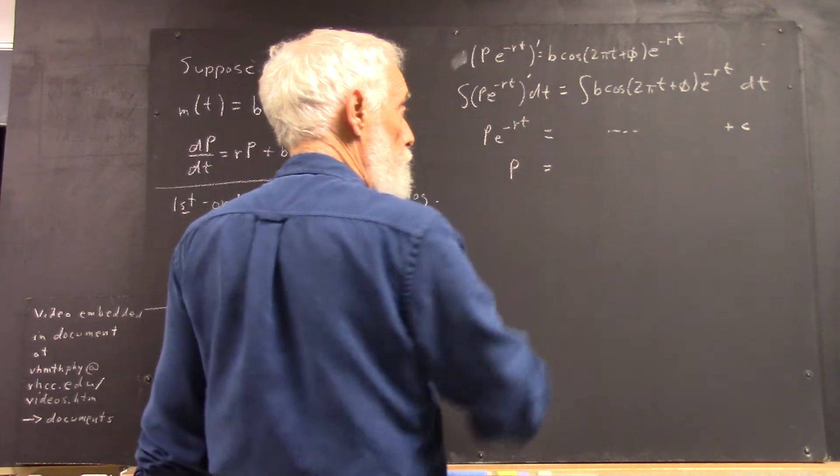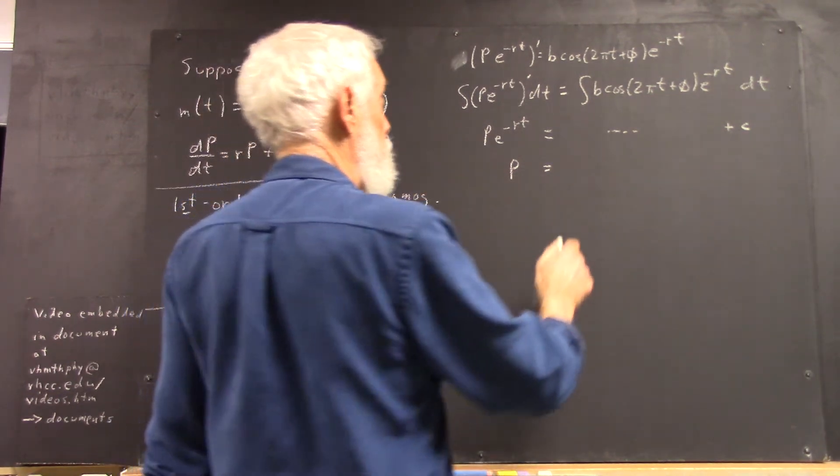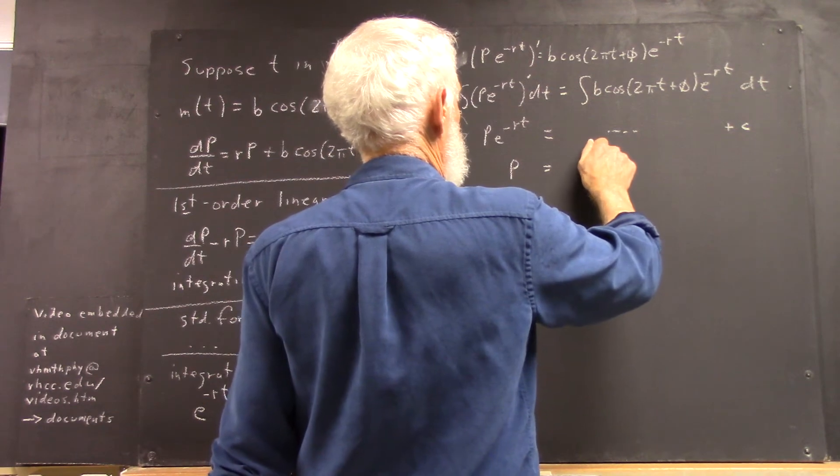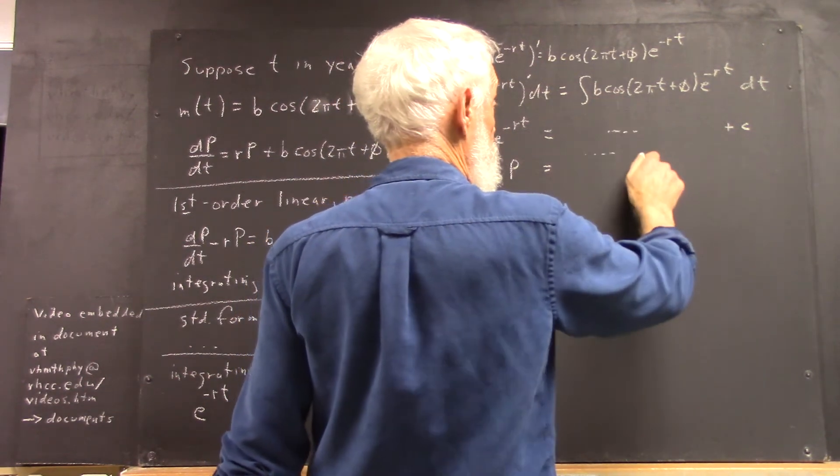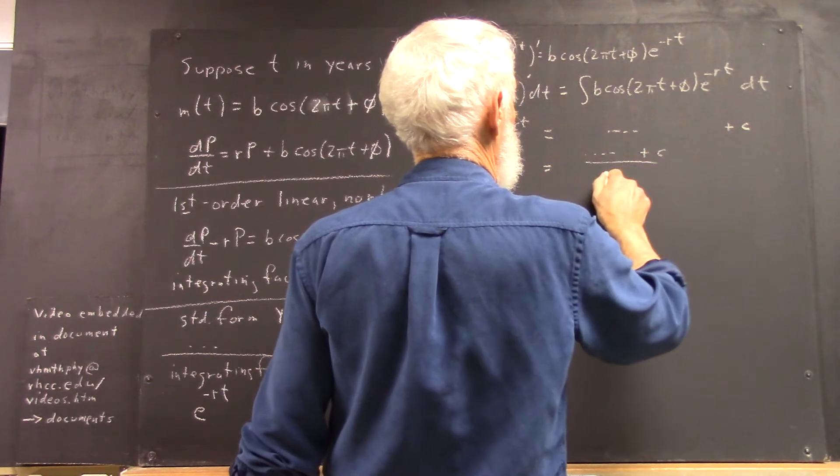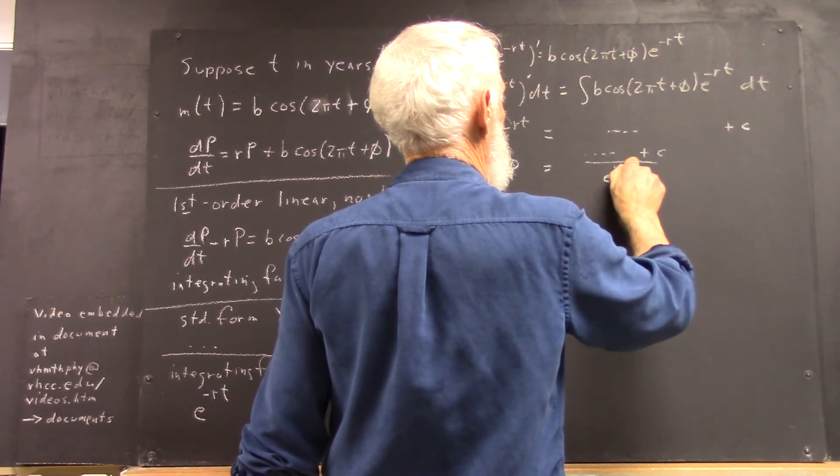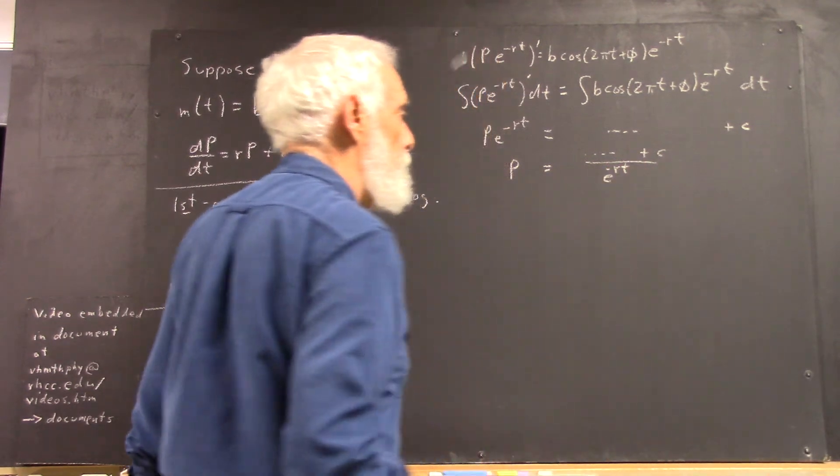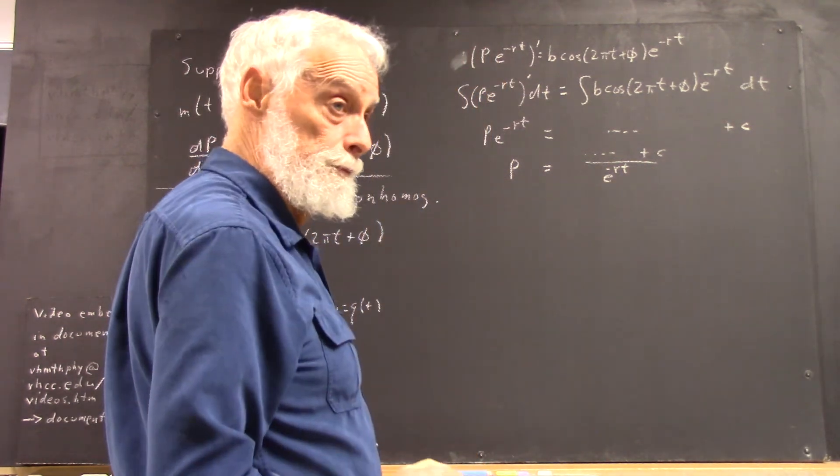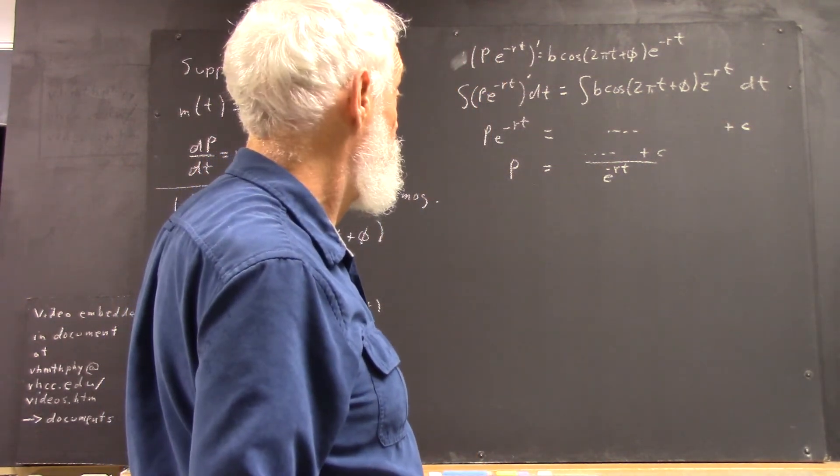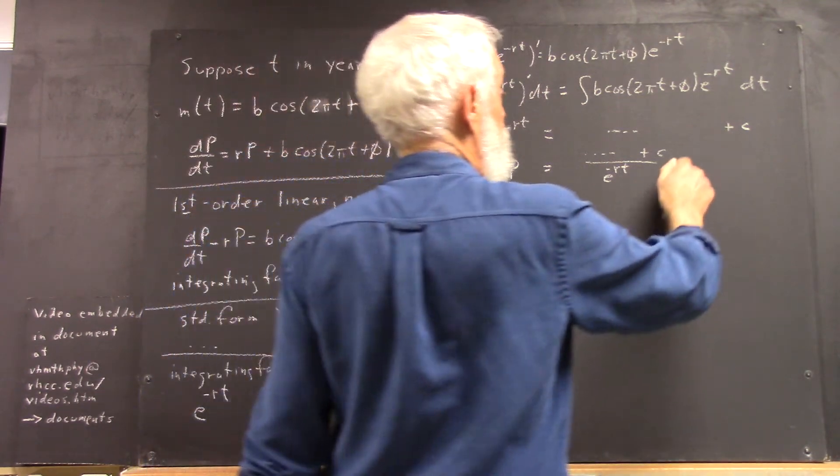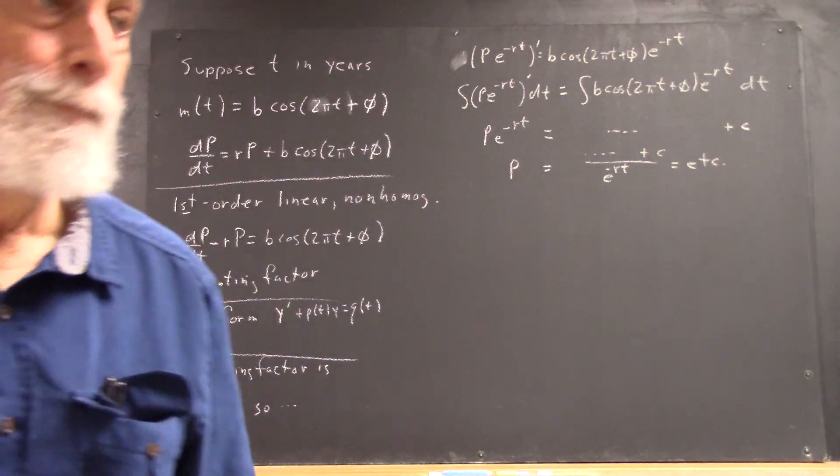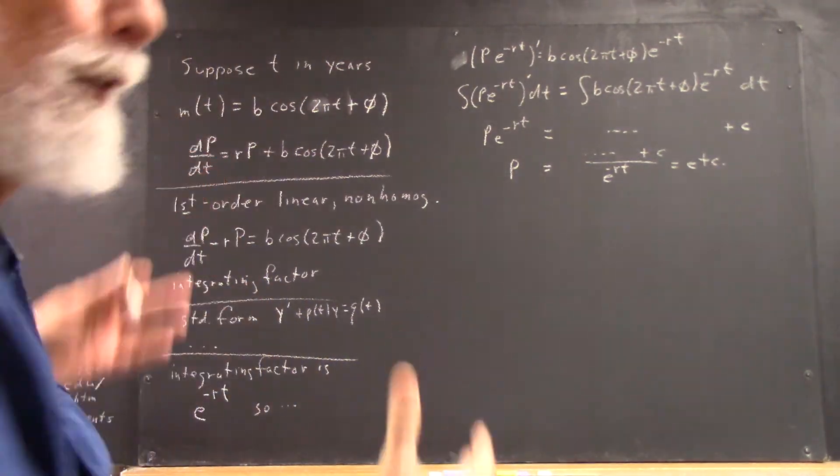So, your function then becomes just p equals this integral, whatever you get from the integral, plus c over e to the negative rt. And then, okay, those are steps that you need to be able to fill in.